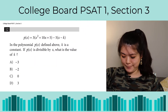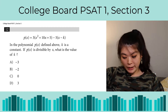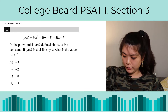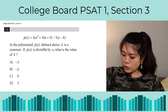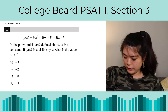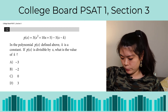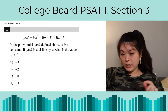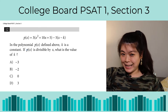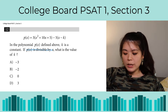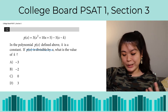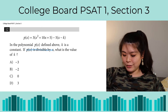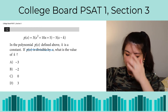Here is our first question. In the polynomial p(x) defined above, k is a constant. If p(x) is divisible by x, what is the value of k? The most important thing we need to understand is this phrase: p(x) is divisible by x. What does that mean? For a polynomial to be divisible by x, that means x is a factor of that polynomial. If we solve this polynomial equal to zero, we know that zero is a root or a solution to this polynomial.